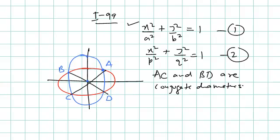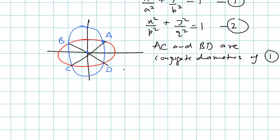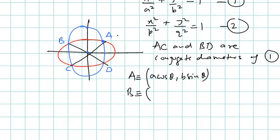If A, B, C, D are the extremities of conjugate diameters of the first ellipse, we can represent A as (a·cosθ, b·sinθ). If the eccentric angle of A is θ, then that of B is θ + π/2, giving B as (−a·sinθ, b·cosθ).